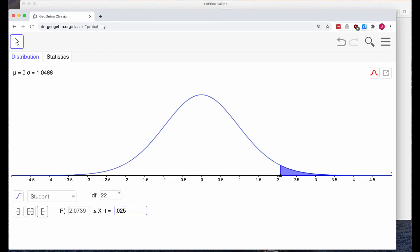Our degrees of freedom is still 22. Here's our 2.5% that is now shaded purple in the right tail. And our t-critical value is 2.0739. So that means that if we go out 2.07 standard deviations above the mean, we will get 2.5% area in the tail.